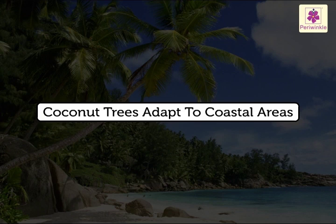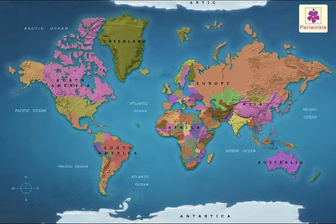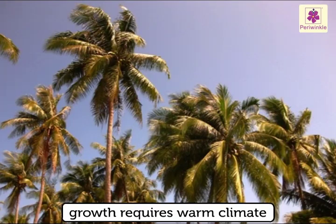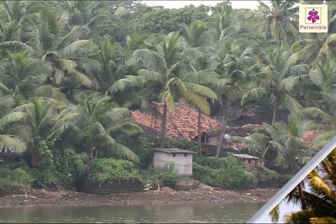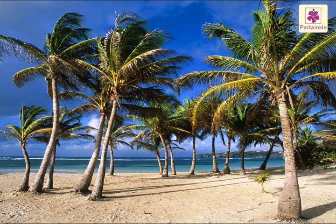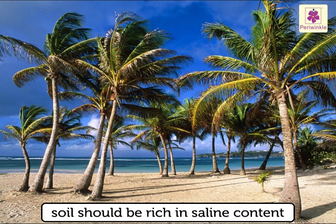Coconut trees adapt to coastal areas. Coconut trees are grown in tropical countries all over the world. They are mostly grown in coastal areas because they require a warm climate and are intolerant of cold weather. They need high humidity and regular rainfall for optimum growth. They grow in soil with rich saline content, which is found mainly in the coastal areas.